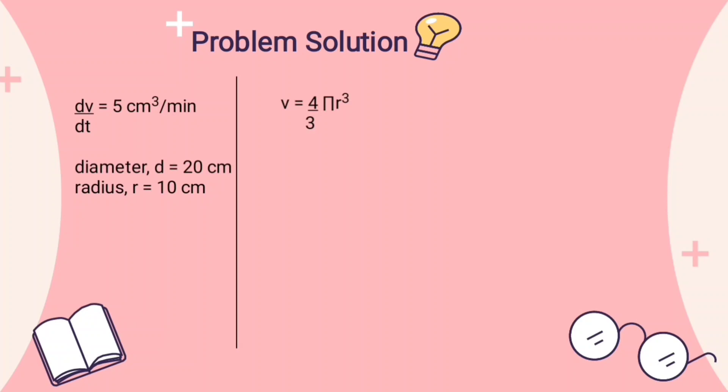We need to find the equation that's related to the equation. In this case, we can relate with the formula volume of a sphere: V = 4/3 πr³. And we need to differentiate the volume with respect to radius.